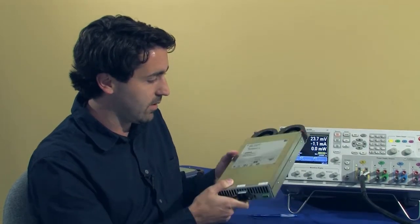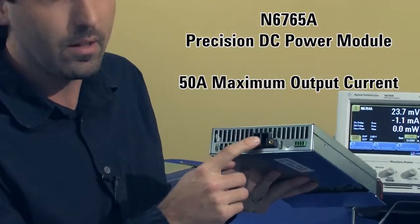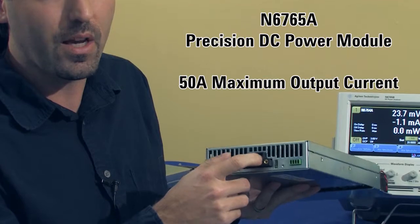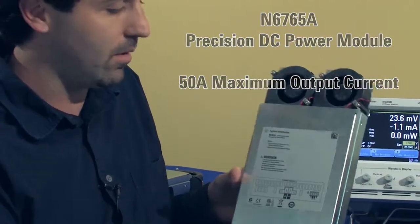But we have modules that actually go even higher than that. This is an example, the N6765A. You can see it has a very large output connector to handle the 50 amps, so you can actually charge faster with this one if you wanted to use this one.